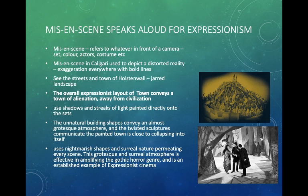The film uses shadows and streaks of light painted directly onto the sets. The unnatural building shapes convey an almost grotesque atmosphere, and the twisted structures communicate that the town is close to collapsing into itself. We see the use of nightmarish shapes and surreal nature permeating every single scene. This grotesque and surreal atmosphere is effective in amplifying the gothic horror element and is an established example of expressionist cinema.